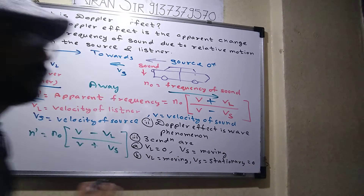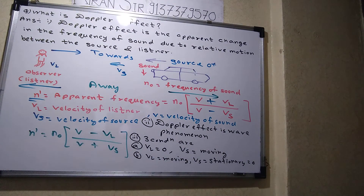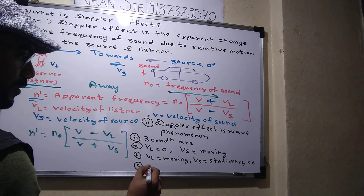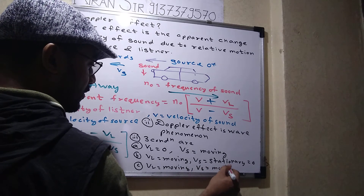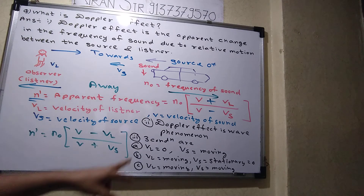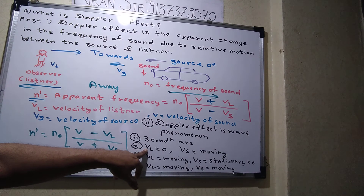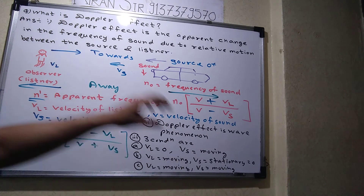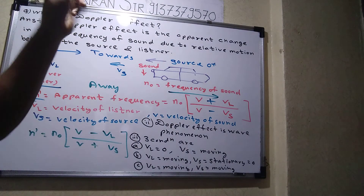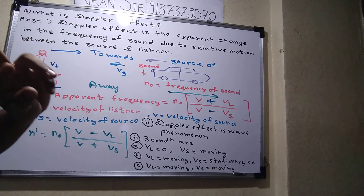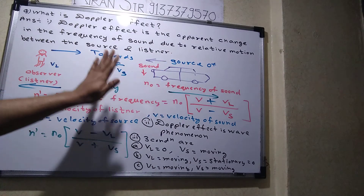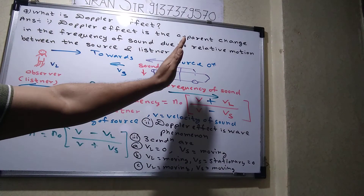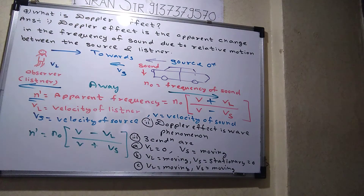Second condition: the listener is moving with some velocity but the source is stationary. Third condition: both the listener and source are moving — Vl is non-zero and Vs is non-zero. Each condition has sub-conditions: moving towards or moving away from each other.